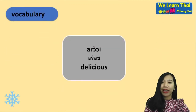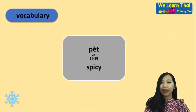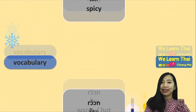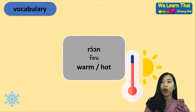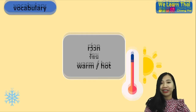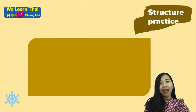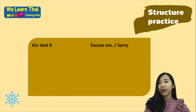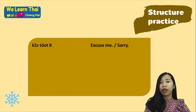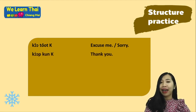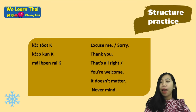Aroi means delicious. 'Phet' means spicy. 'Rón' means warm or hot. For starter practice phrases: 'Khaw thot kha' — excuse me or sorry. 'Khob khun kha' — thank you. 'Mai pen rai kha' — that's all right or you're welcome.